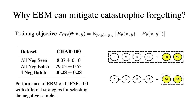Why can the energy-based model mitigate catastrophic forgetting? We compare the proposed contrastive divergence training objective with two baselines. The first baseline, all-negative-same, means negative classes are all classes seen so far. The second, all-negative-batch, means negative classes are all classes in the current batch. One-negative-batch is our proposed training objective, which samples only a single negative class from the current batch, and we find that it achieves the best results.